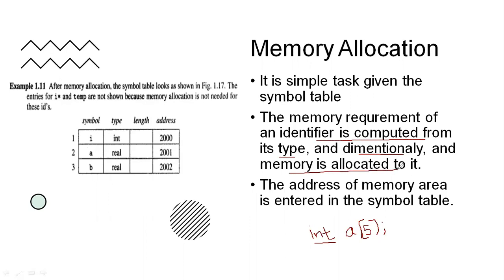Memory is allocated based on type and dimensionality. For array a[5], memory requirement is 10 bytes if int takes 2 bytes. For a single variable a, it takes only 2 bytes. The address of each memory area is entered into the symbol table. In the example of a = b + i, where a and b are real and i is integer, i is entered first, then a, then b — as seen in generation of the symbol table in the front end.